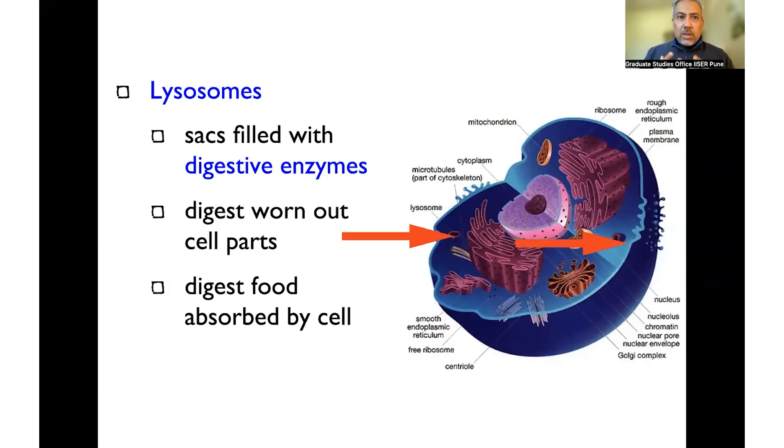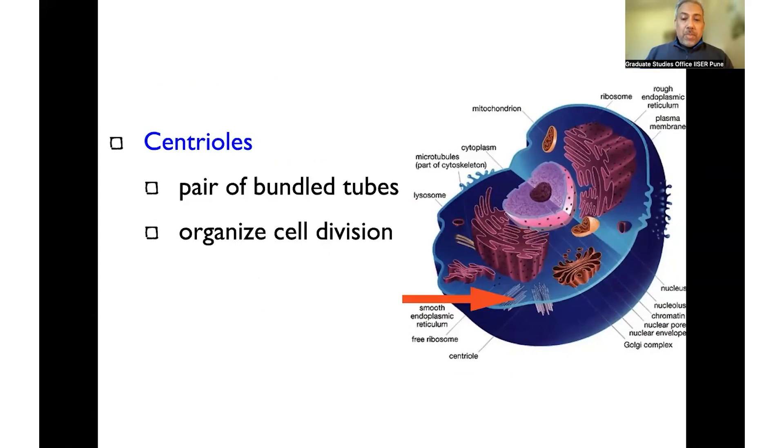We have things like lysosomes, which are very unique structures that are filled with digestive enzymes that are able to digest things, break them down when required. We have structures like the centrioles, from which cytoskeletal components like the microtubules originate and distribute throughout the cell.